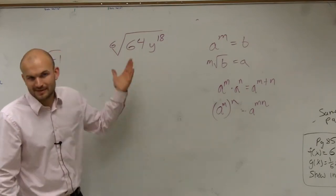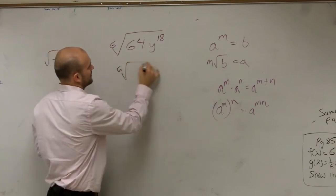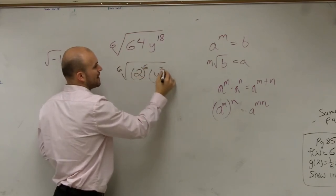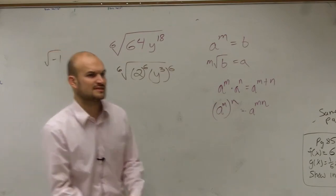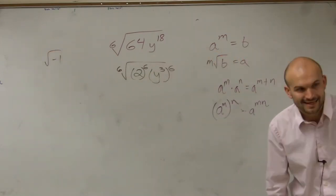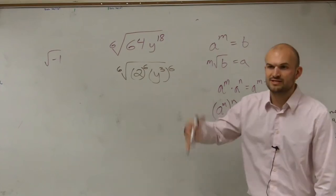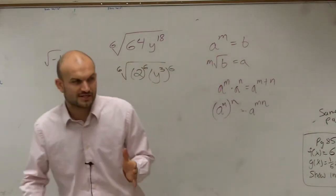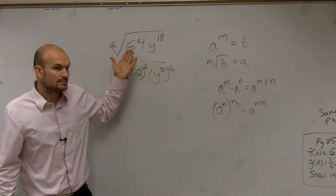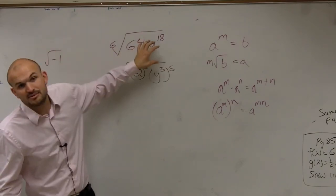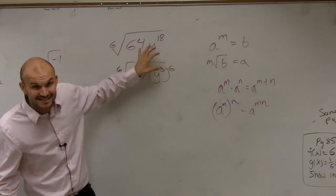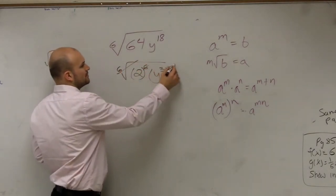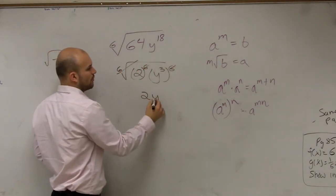Now the sixth root. We know 64 can be written as 2 raised to the sixth power. And y to the 18th can be written as y to the third power, raised to the sixth, because 6 times 3 gives us 18. Since we have an even power here, this has to be positive. When I undo the sixth roots, I'm left with 2y cubed.